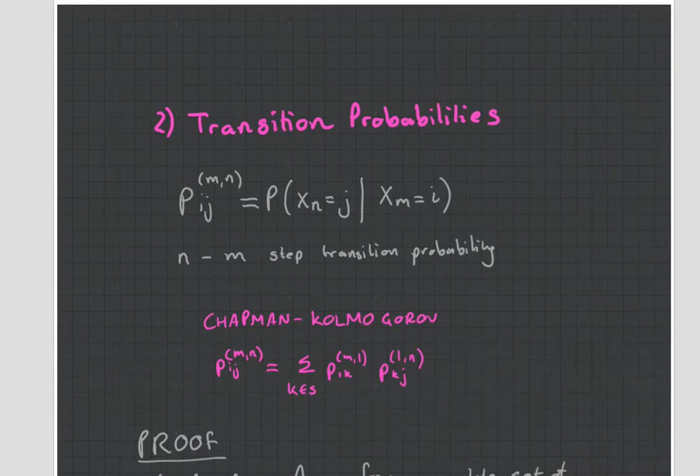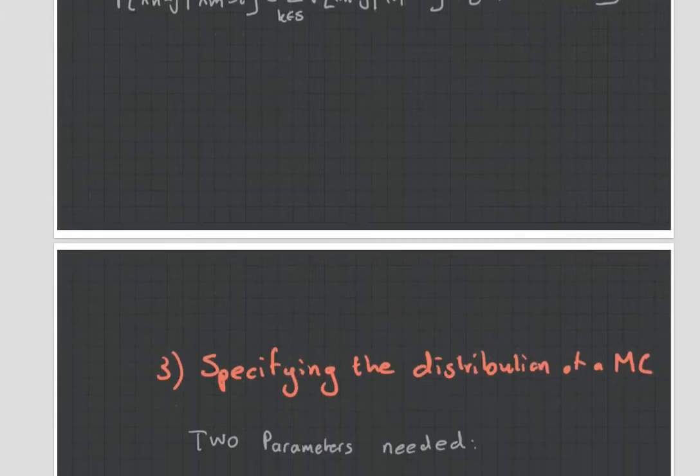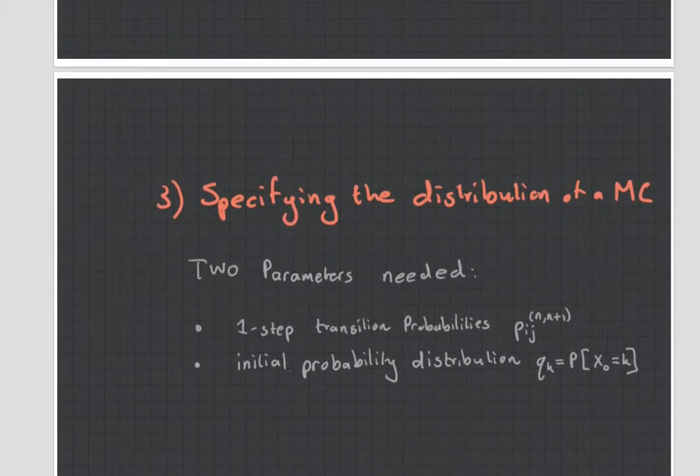Now, why do we care about transition probabilities? Because if we have the one-step transition probabilities, so just from like N to N plus 1 time, we have the one-step transition probabilities and we have the initial probability distribution, then these are the only things we need to specify the distribution of a Markov chain. And that's quite cool. There's just two parameters.